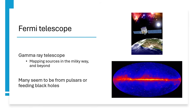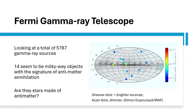Fermi did a survey and looked at nearly 6,000 — 5,787 — gamma-ray sources across the sky, and eliminated all but 14 of them as being black holes, quasars, pulsars, that sort of thing — things that we now think we understand pretty well. But it left 14 that seemed to be in the Milky Way, relatively nearby compared to most of the others, and that had the 511 kilo-electron-volt signature of antimatter annihilation, and were point sources. So, are these in fact anti-stars — stars made of antimatter — floating around in our Milky Way?